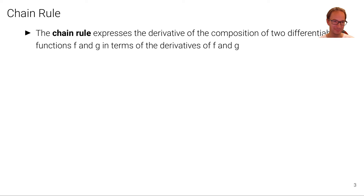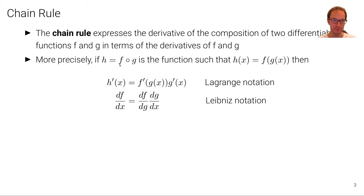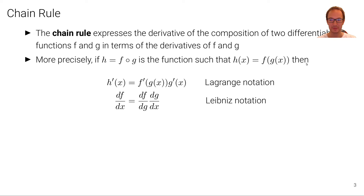All of you have heard of the chain rule. The chain rule expresses the derivative of the composition of two differentiable functions f and g in terms of the derivatives of f and g. More precisely, if we denote the composition of functions f and g — typically denoted by a little circle — as another function h, such that h(x) = f(g(x)), we take x as an input to g and then the output of g as an input to f. That composed, nested function is what we call h(x).